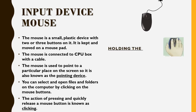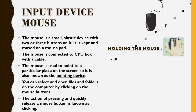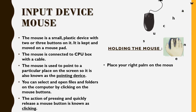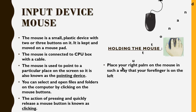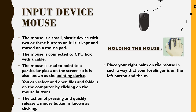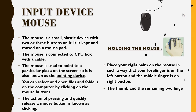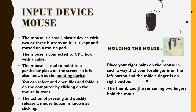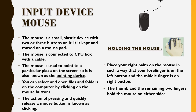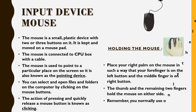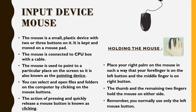Holding the mouse: Place your right palm on the mouse in such a way that your index finger is on the left button and the middle finger is on the right button. The thumb and the remaining two fingers hold the mouse on either side. Remember, you normally use only the left mouse button.